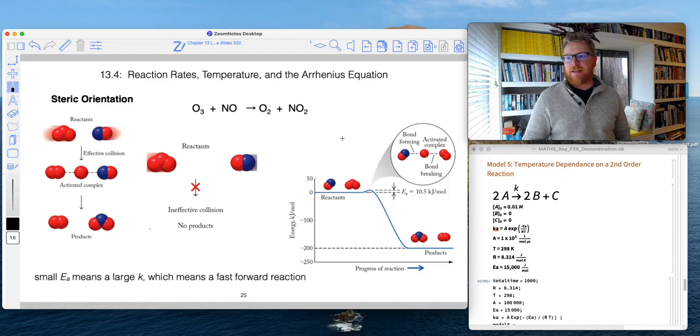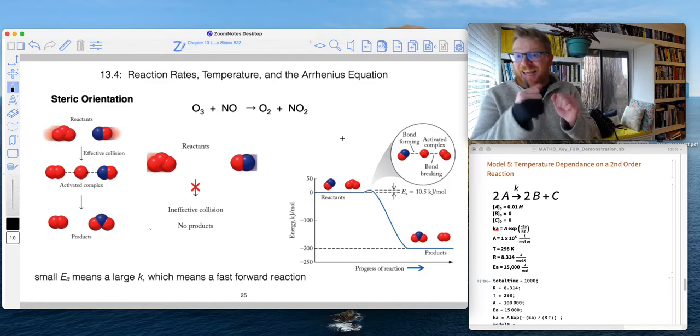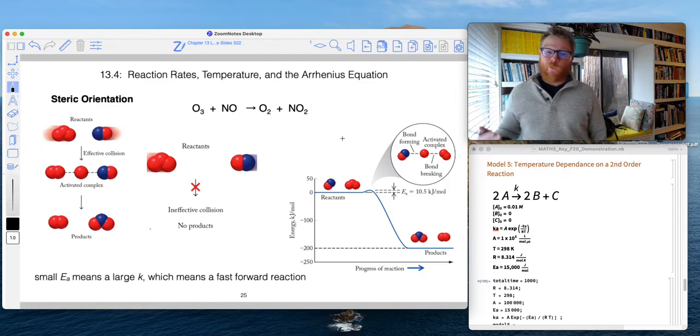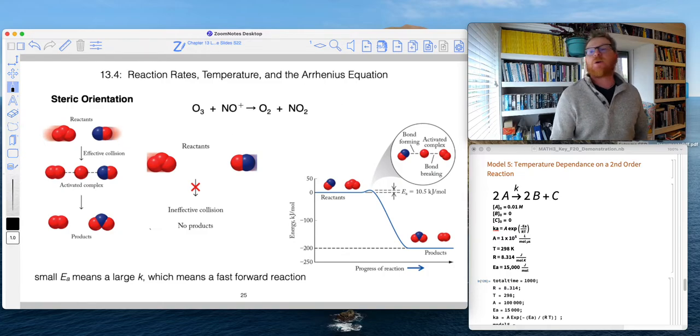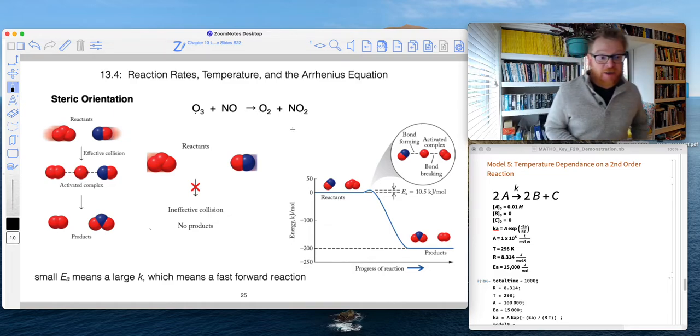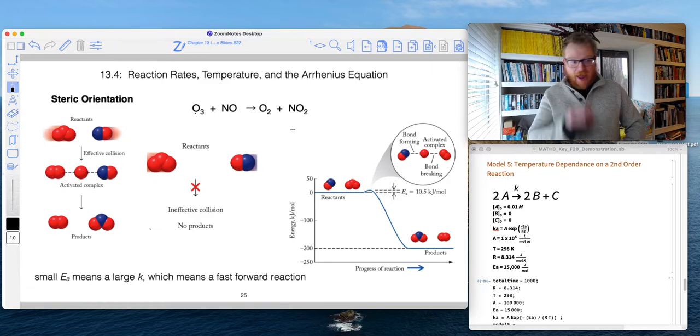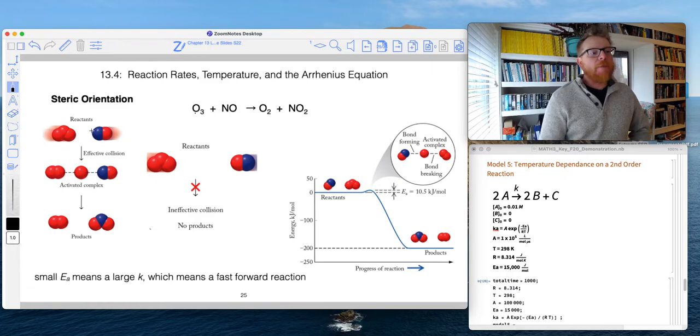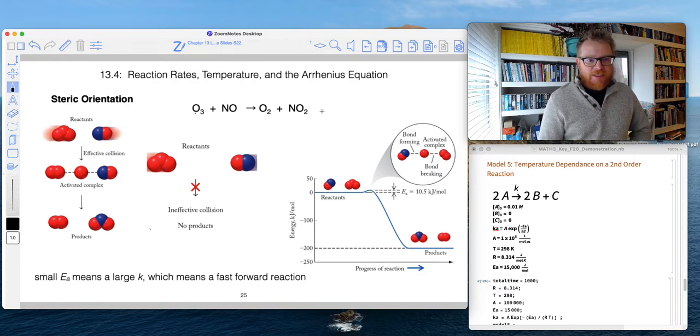So oftentimes, our molecules need to be oriented in a special way in order to react. So here's one example of that. So O3 and NO react to form O2 and NO2. And this is a very simple one-step reaction. And so if you look at this here and you look at our final products, what we notice is that one of our oxygen bonds,